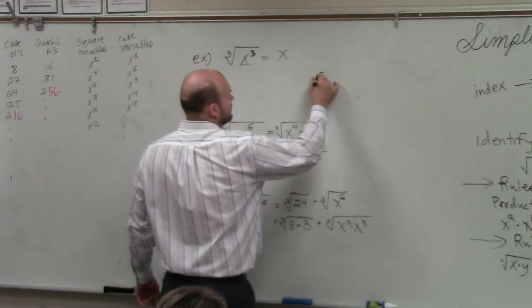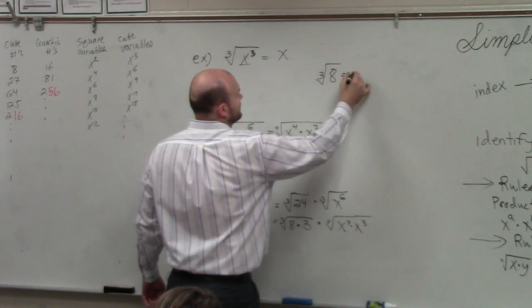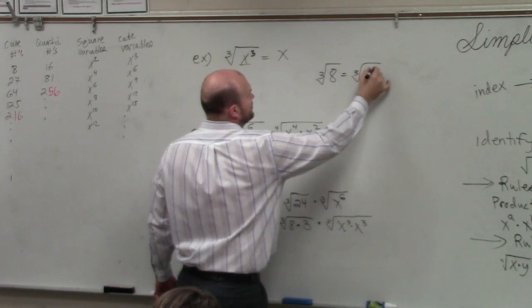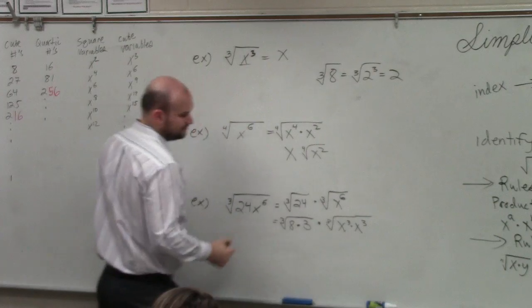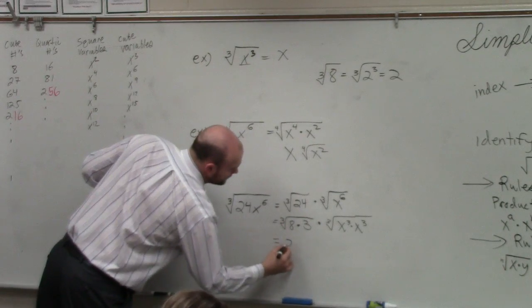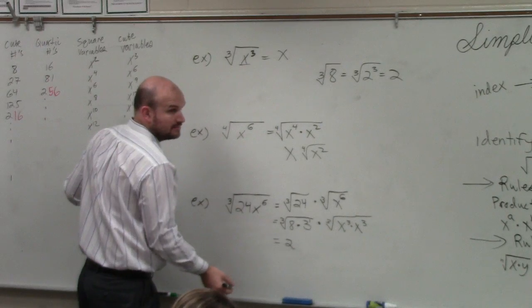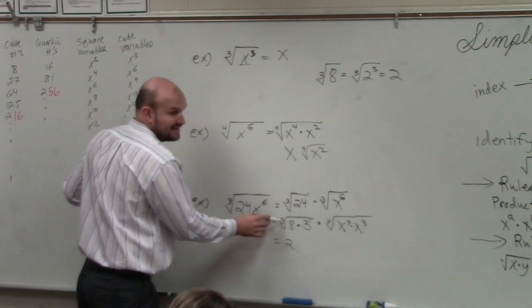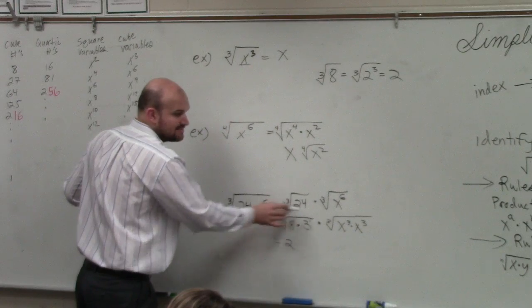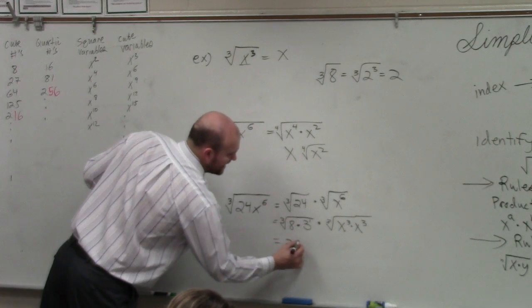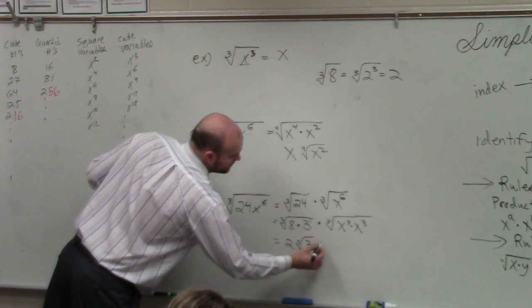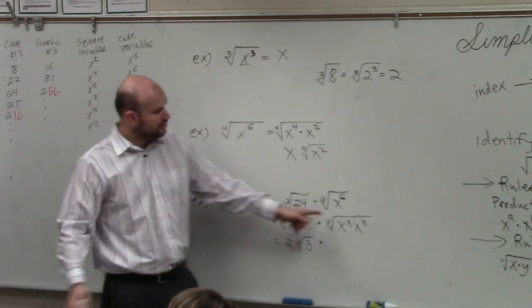Remember, cube root of 8 is equal to the cube root of 2 cubed, which is equal to 2. I can't take the cube root of 3 because that's raised to the first power. The powers have to be exactly the same, not the index and the base. It has to be both the powers. So this remains the cube root of 3 times the cube root of